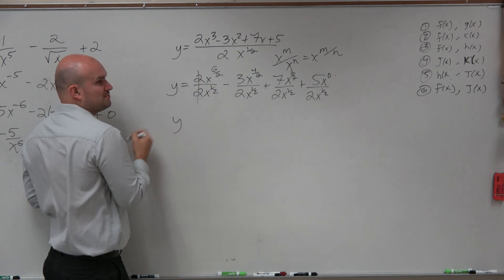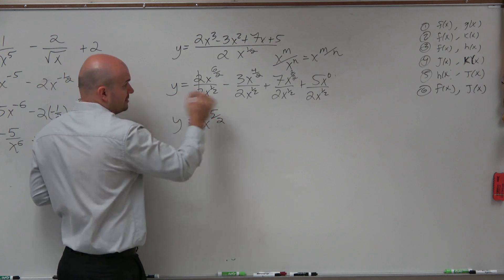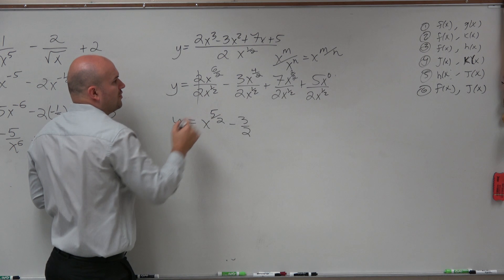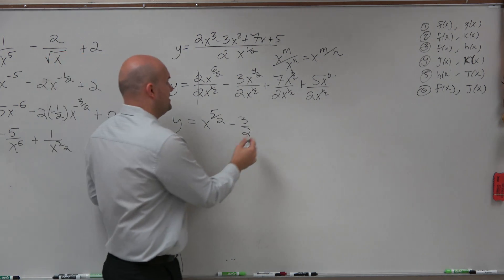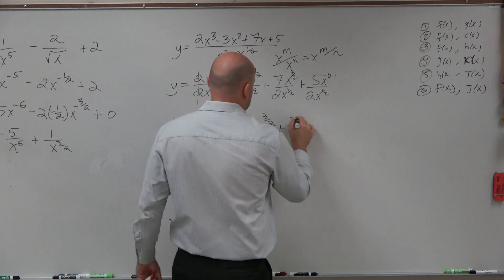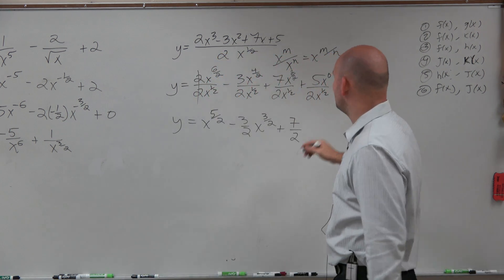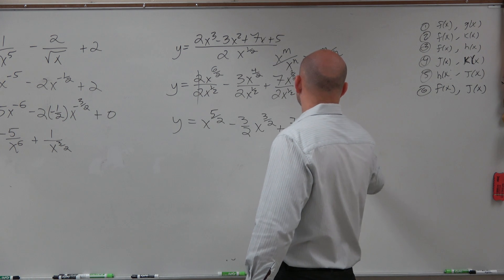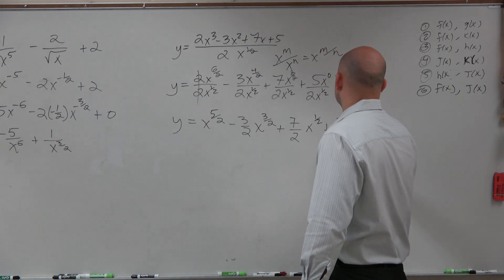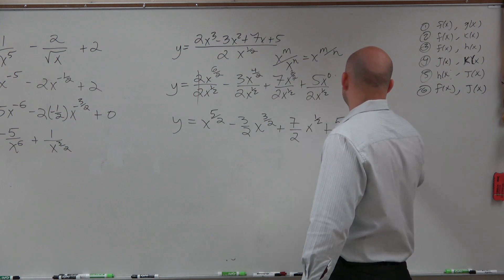6 halves minus 1 half is 5 halves, so we get x to the 5 halves. 4 halves minus 1 half is 3 halves, giving x to the 3 halves. Then 2 halves minus 1 half is x to the 1 half. And finally, that gives us x to the negative 1 half.